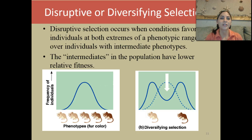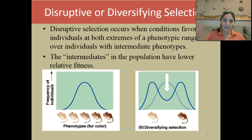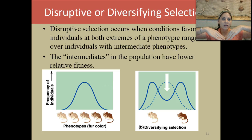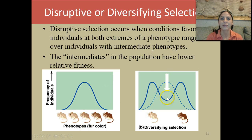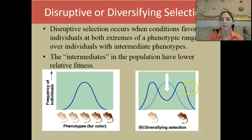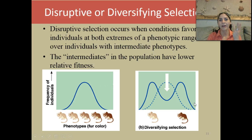The next type of selection is disruptive or diversifying selection. Disruptive selection occurs when conditions favor individuals at both extremes but not in the middle. So the super white mice and the super dark mice are the ones that survive, but the medium brown mice are not so lucky. On the graph we see a high population of light-colored mice and a high population of dark-colored mice, with very few in the middle. Those are the three types of natural selection.